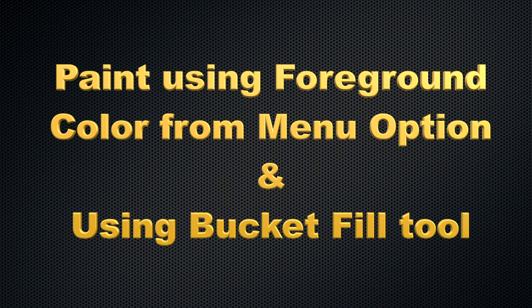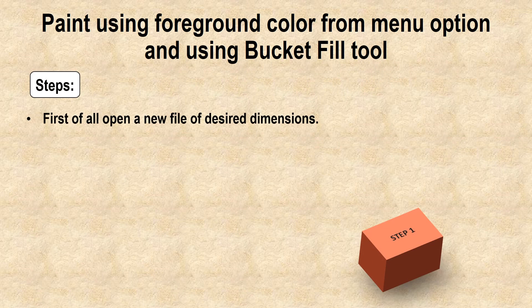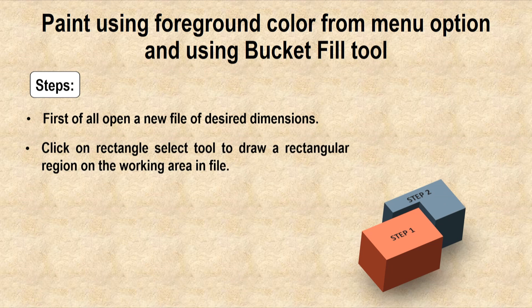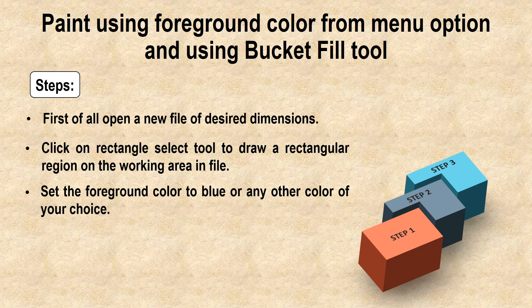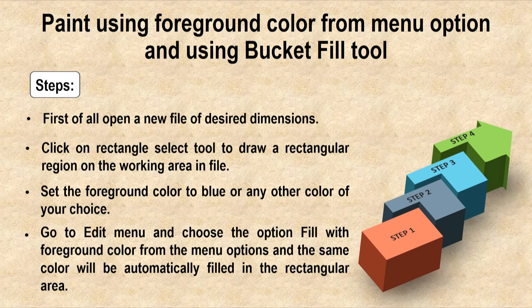Paint using foreground color from the menu option and using bucket fill tool. The steps to be followed are: first of all open a new file of desired dimensions, then click on the rectangle select tool to draw a rectangular region on the working area, then set the foreground color to any specific color of your choice and go to the edit menu and choose the option fill with foreground color. The same color will be filled in the rectangular shape automatically.